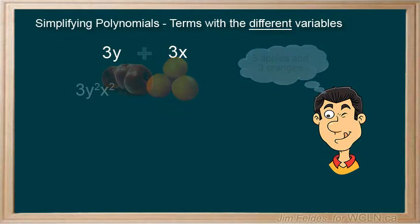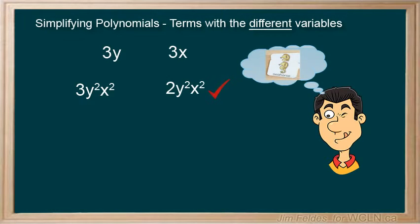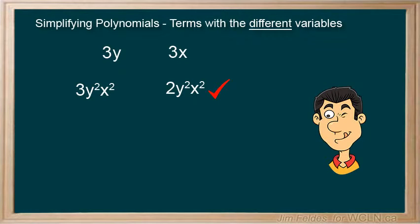But if two terms contain the same variables all raised to the same powers, we have a match. 3y²x² and 2y²x² are like terms as their variable parts are identical. Again, we don't know what the variables represent. But whatever it is, it's the same and thus we can combine them.